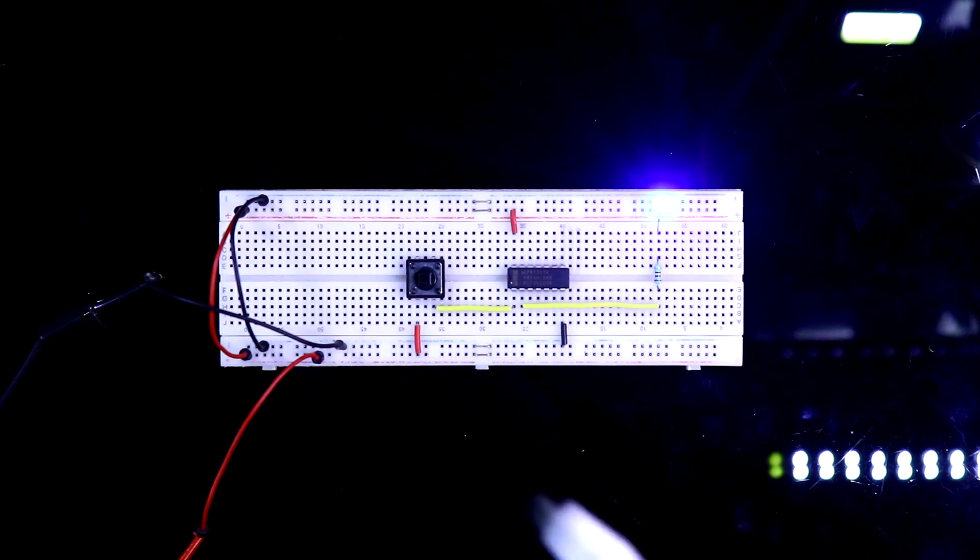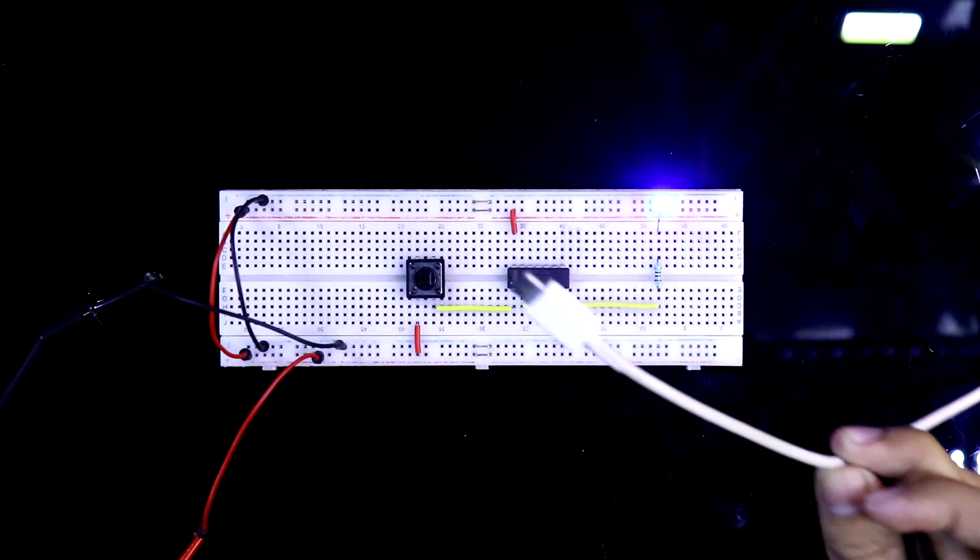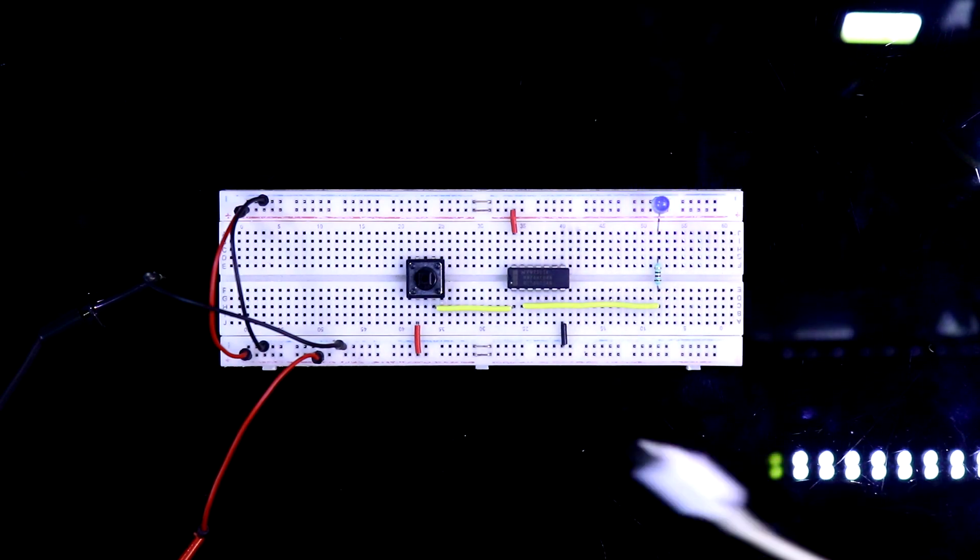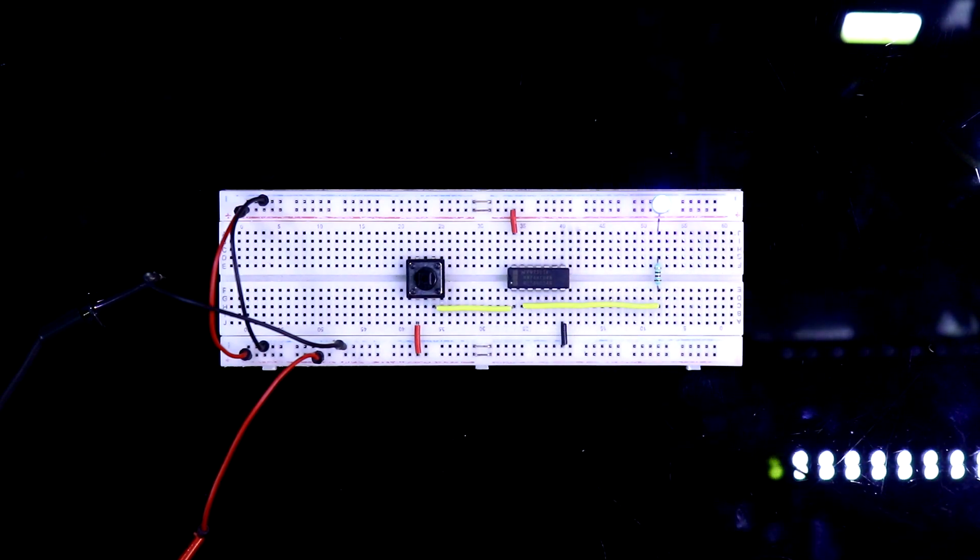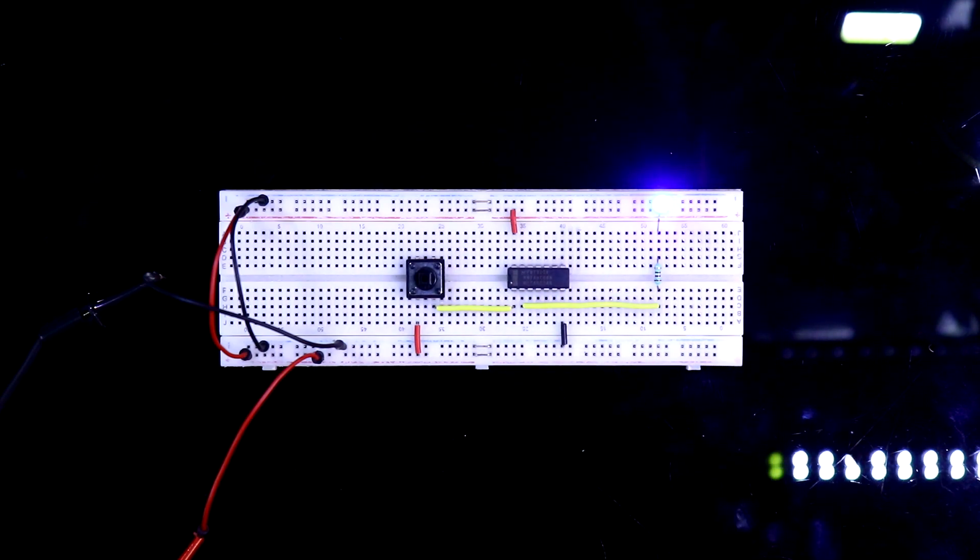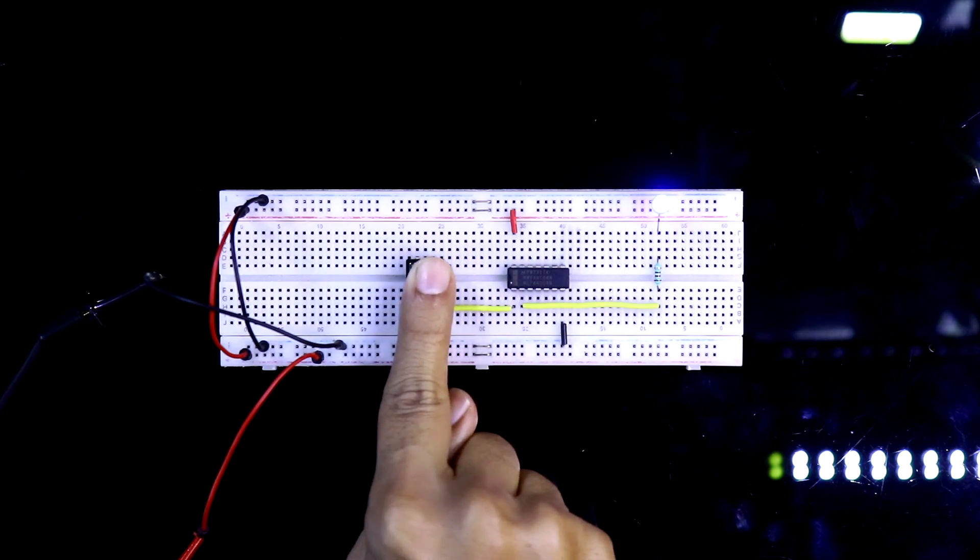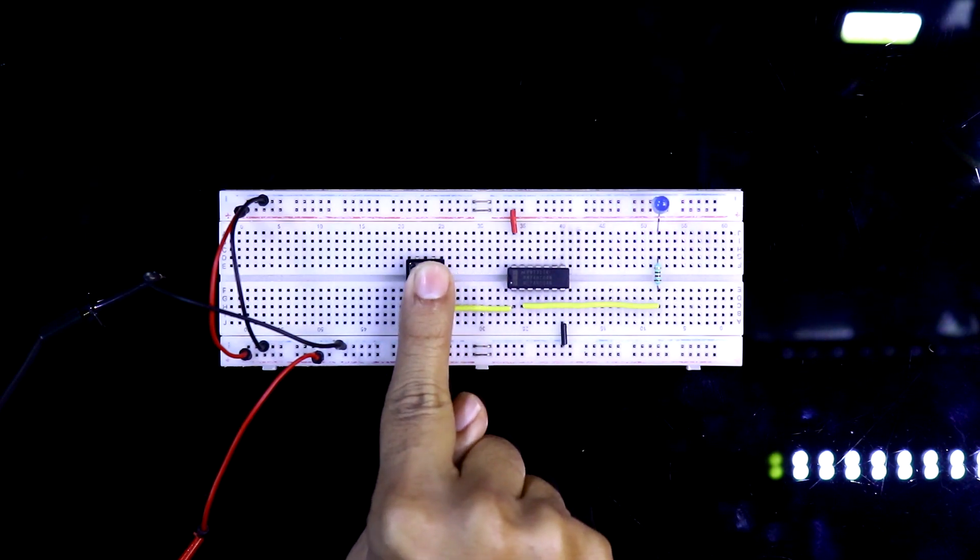This IC is getting some frequency or electrical field. So we are getting the undefined output. So if we don't use pull-up or pull-down resistor, we will get wrong output. Whenever we press the switch, it is not working properly.